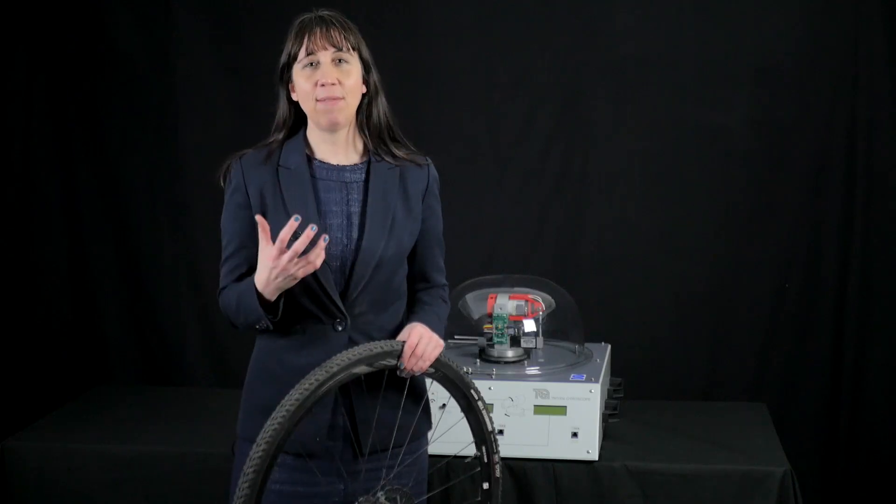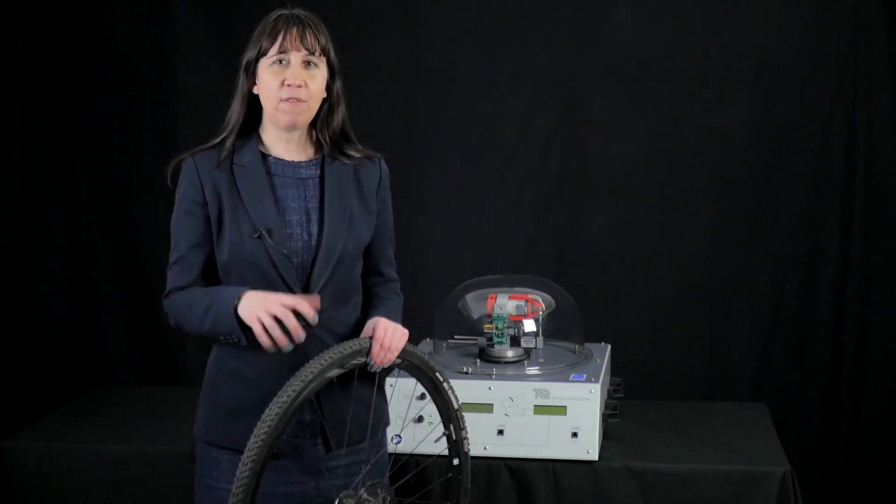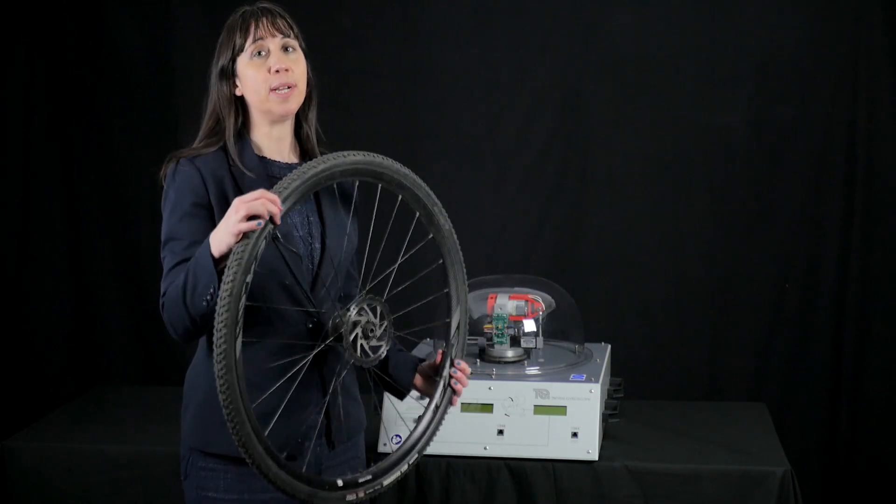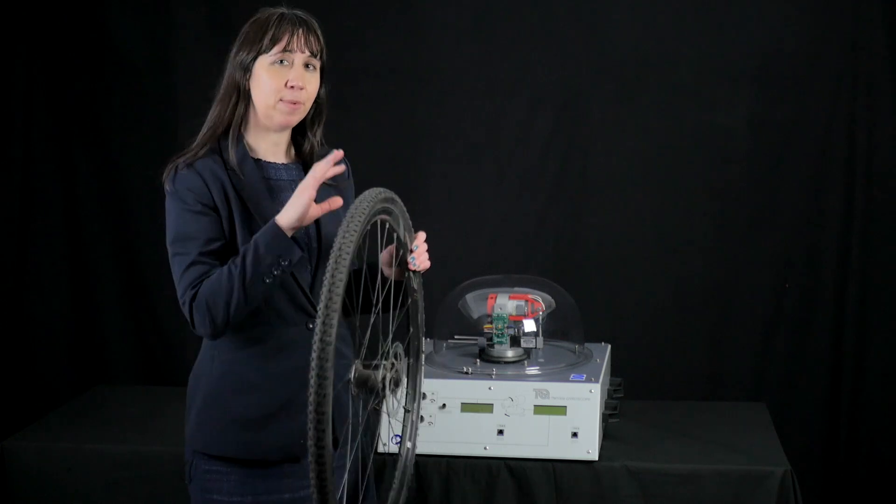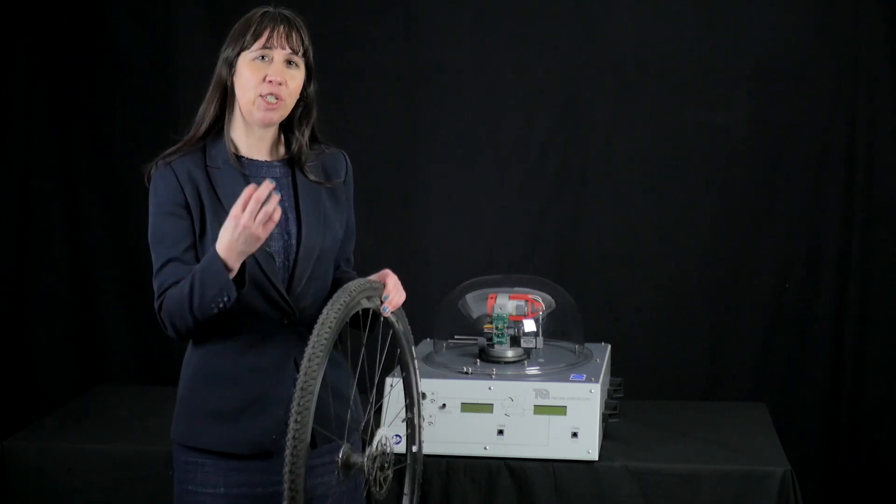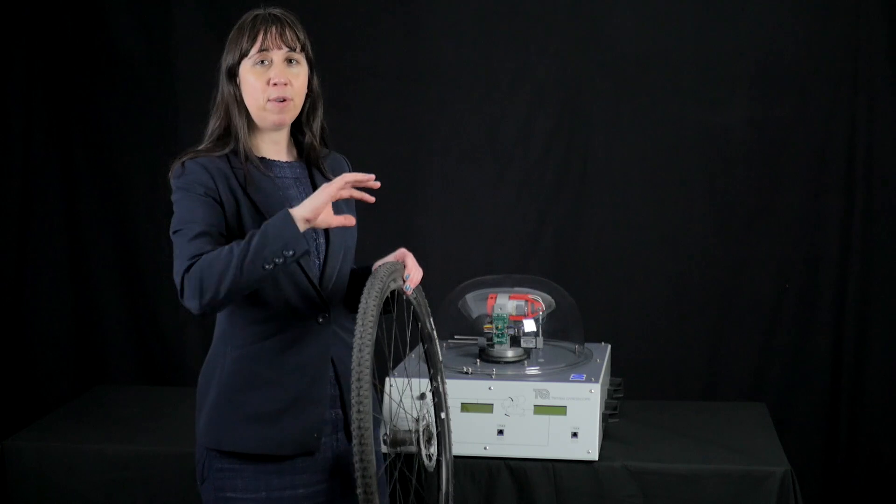In other cases, the gyroscopic forces can be useful. For instance, within a bicycle and motorcycle wheel, they become resistant to axial movement. This helps to keep the machine balanced and upright when moving in a straight line.